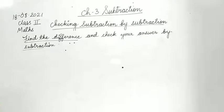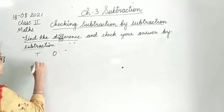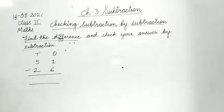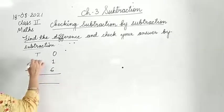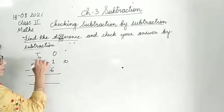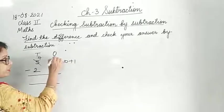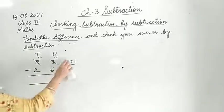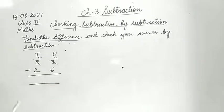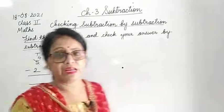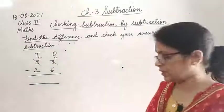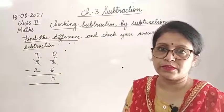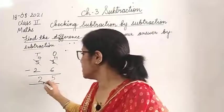Next: 51 minus 26. 1 minus 6 - can't subtract. Borrow from 5 tens, leaving 4 tens. 1 plus 10 becomes 11. 11 minus 6: count from 6 onwards - 7, 8, 9, 10, 11 - answer is 5. Then 4 minus 2 is 2. Answer is 25.